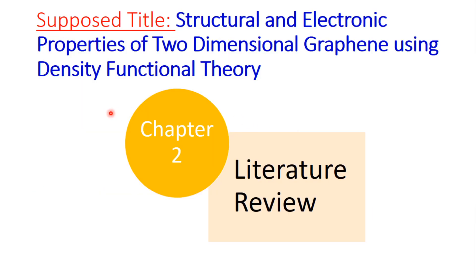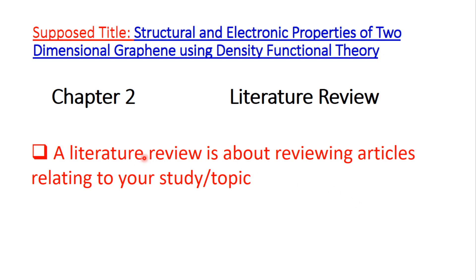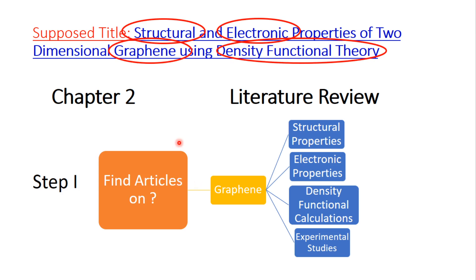Now let's discuss chapter two, the literature review. Literature review is about reviewing articles relating to your study or topic. Step one is finding articles — you need to find articles on graphene, the material in this title. There are different keywords in the title, so one should use all of them: structural properties, electronic properties, and Density Functional Theory.